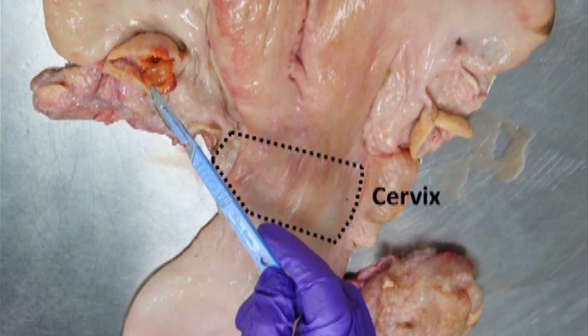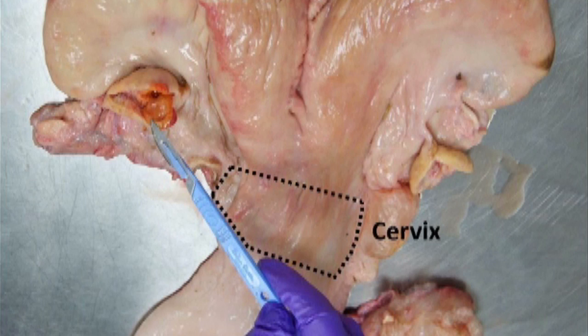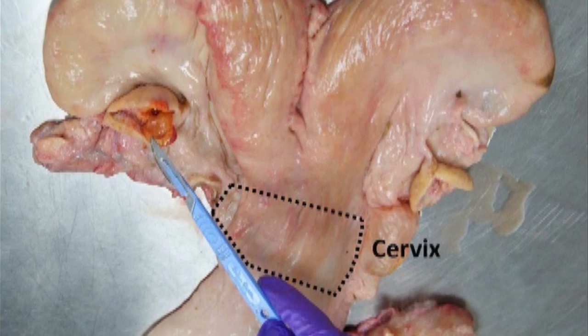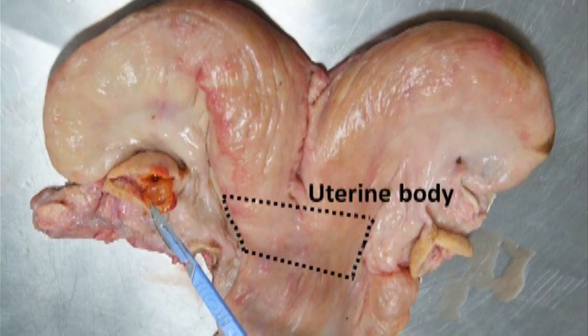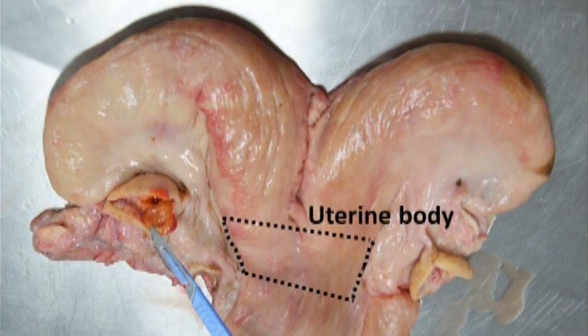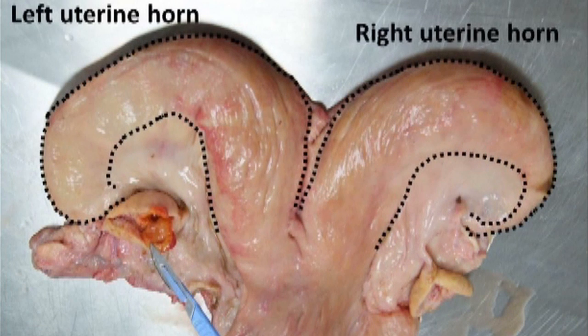As we move further cranially, we will come to the cervical region. Beyond the cervix is the uterine body, which then splits into a right and a left uterine horn.